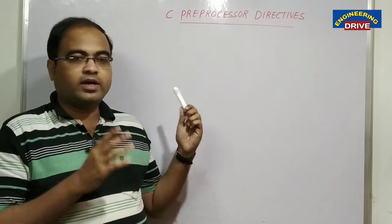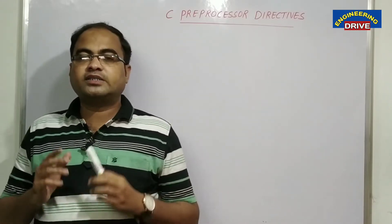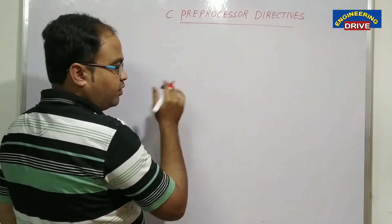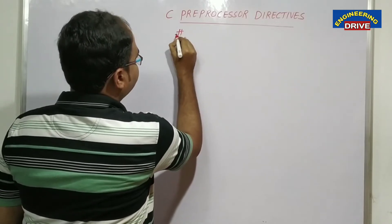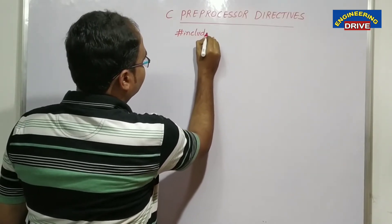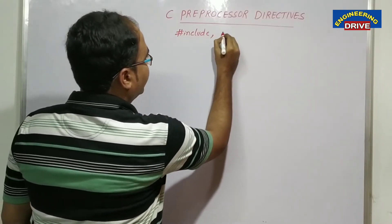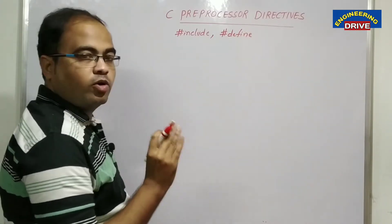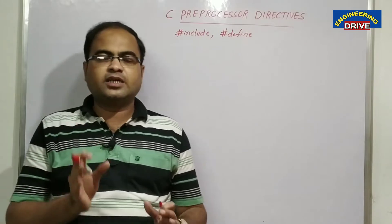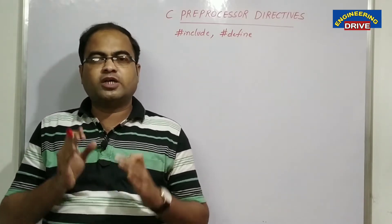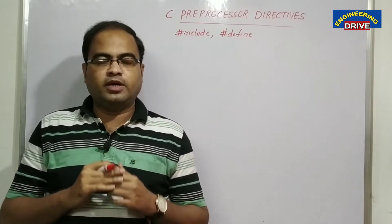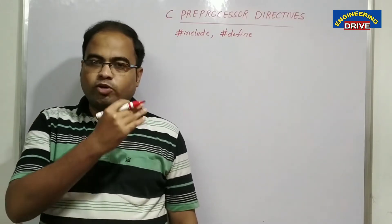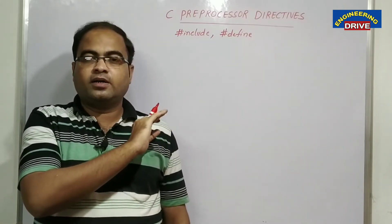Let us have a clear understanding of what C preprocessor directives are. There are two C preprocessor directives that we commonly come across. One is hash include — this is one preprocessor directive — and the second one is hash define. There will be many more, but these are the most popularly used preprocessor directives in our programs.